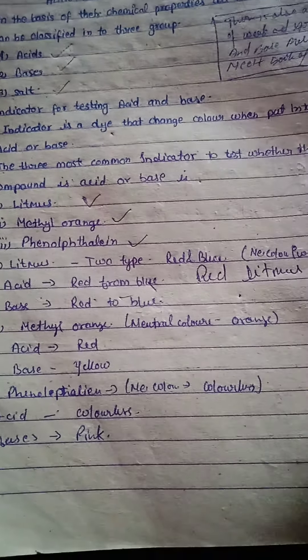Some plant petals such as hydrangea, petunia, and geranium, which change color in the presence of acid and base, also act as indicators. For example, the flowers of hydrangea plant are usually blue which turn pink in the presence of base.